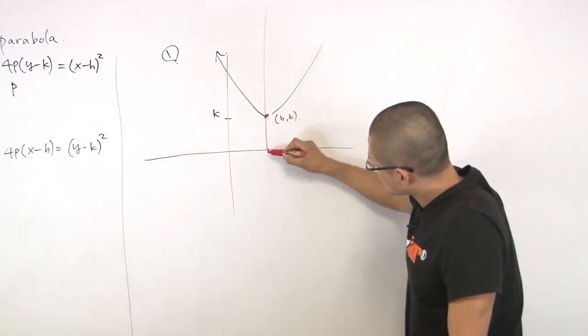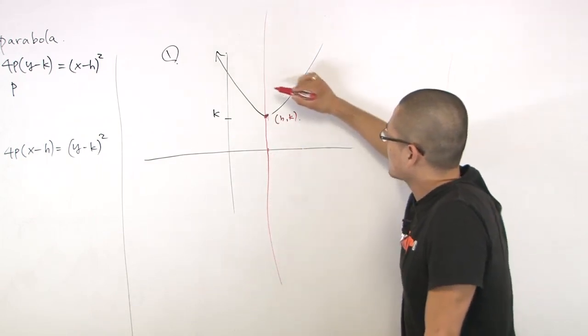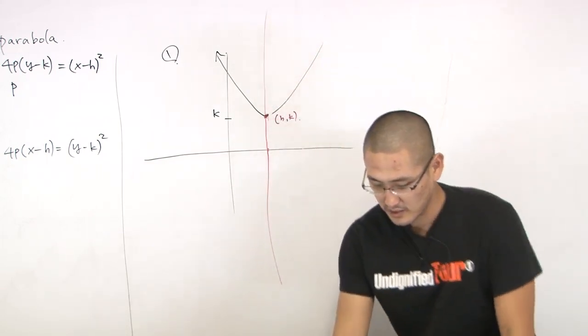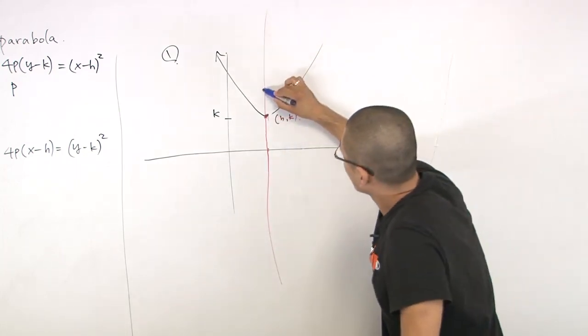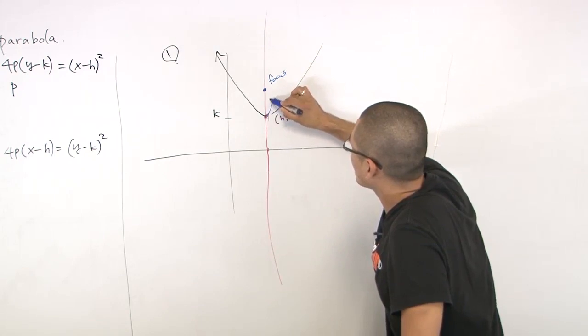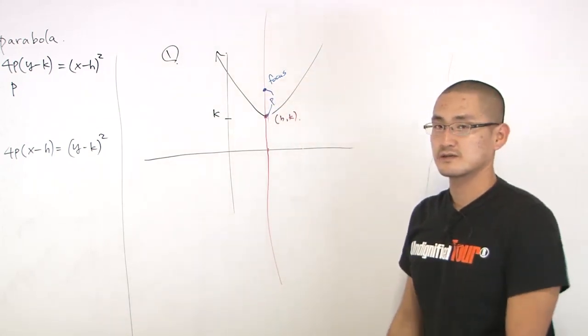Okay, so focus is somewhere inside the loop here. Let's make blue mark. And this focus is P away from the vertex.